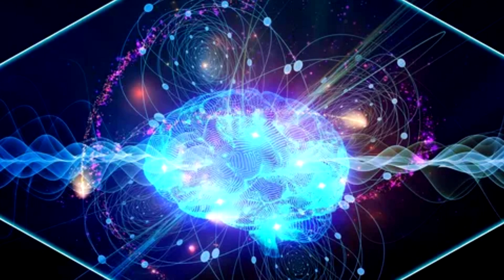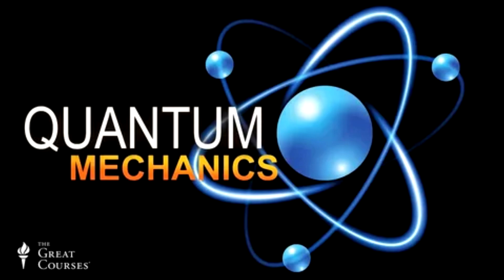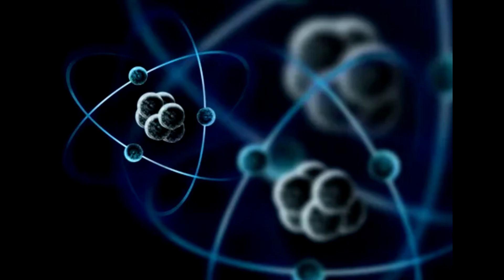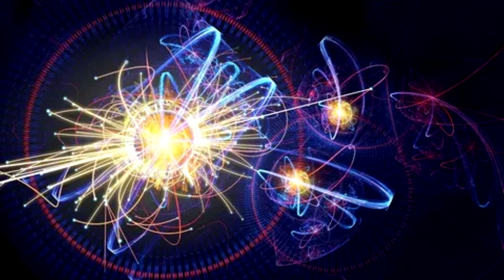Instead, when the experiment is conducted, an interference pattern forms on the screen. This pattern of dark and bright bands makes sense only if the electrons are waves, with crests (high points) and troughs (low points) that can interfere with one another.